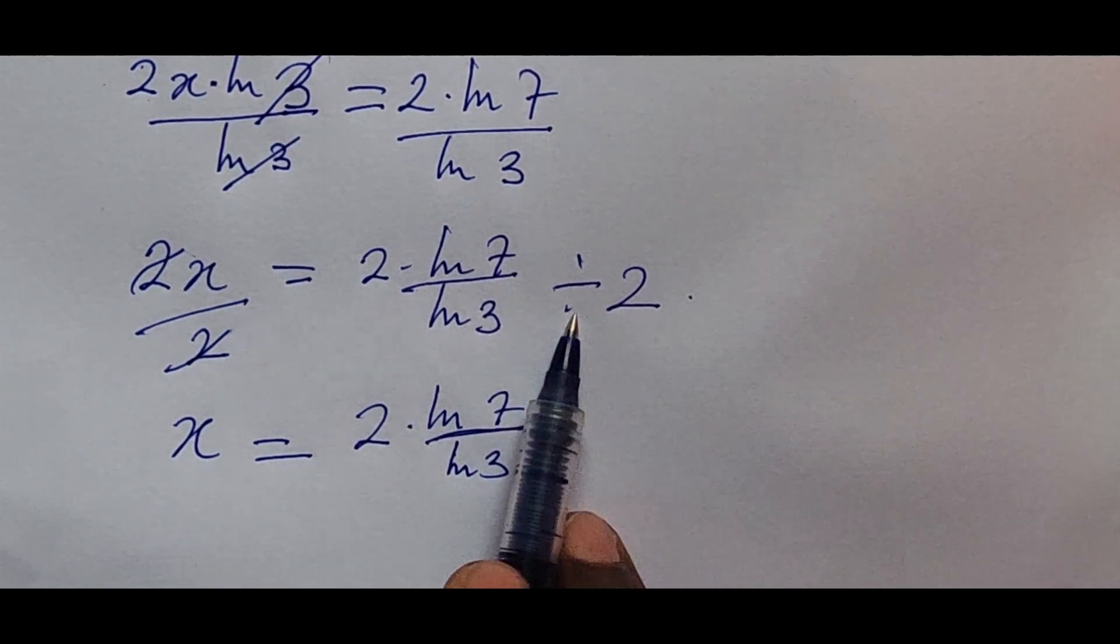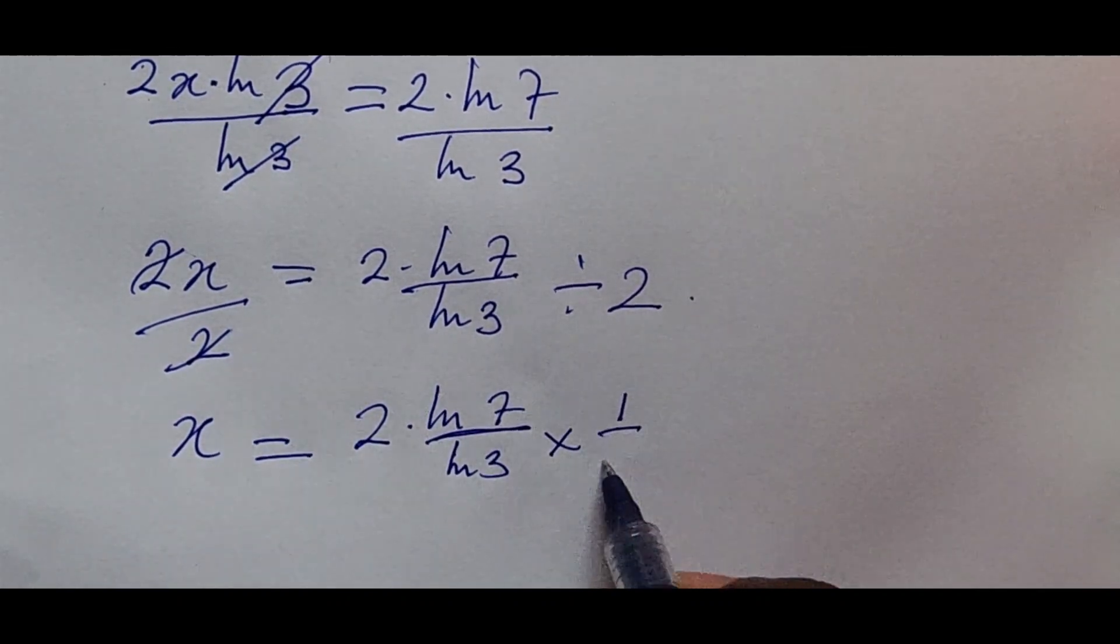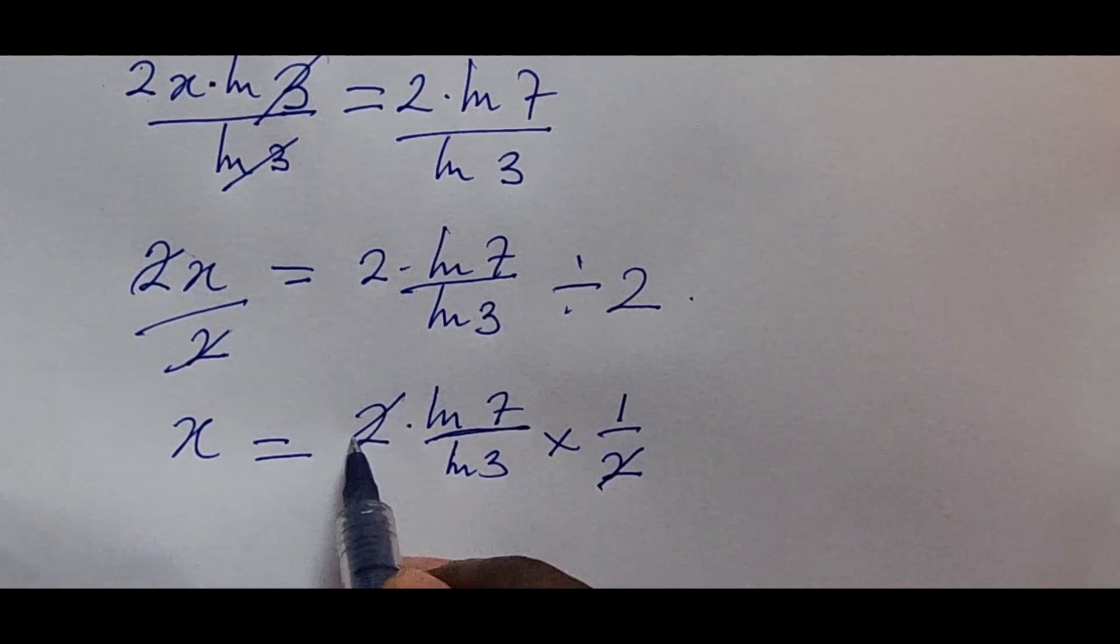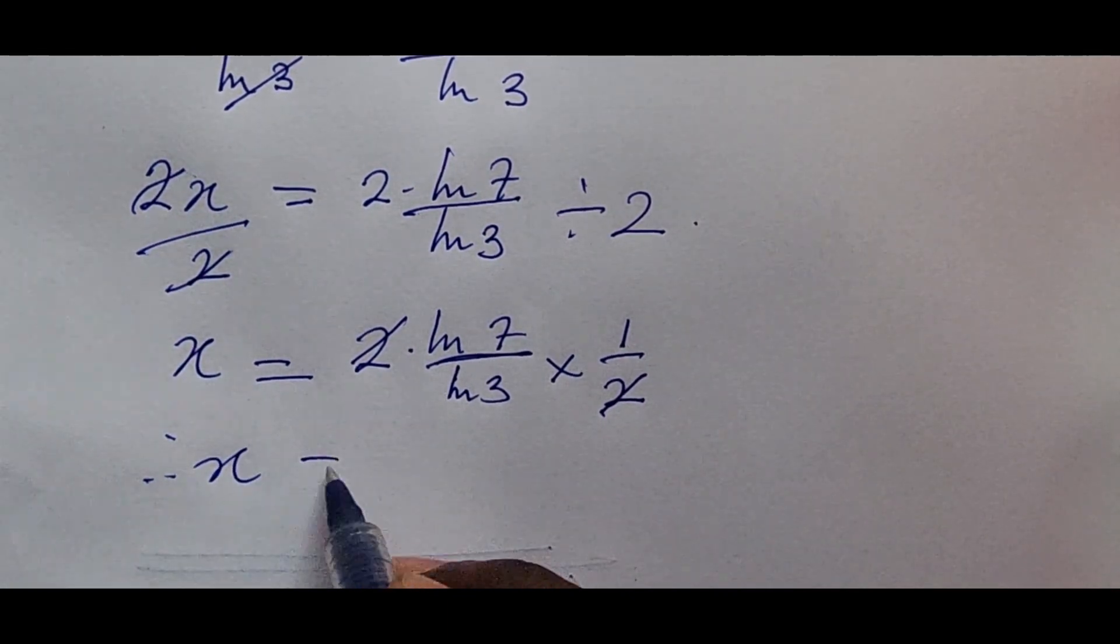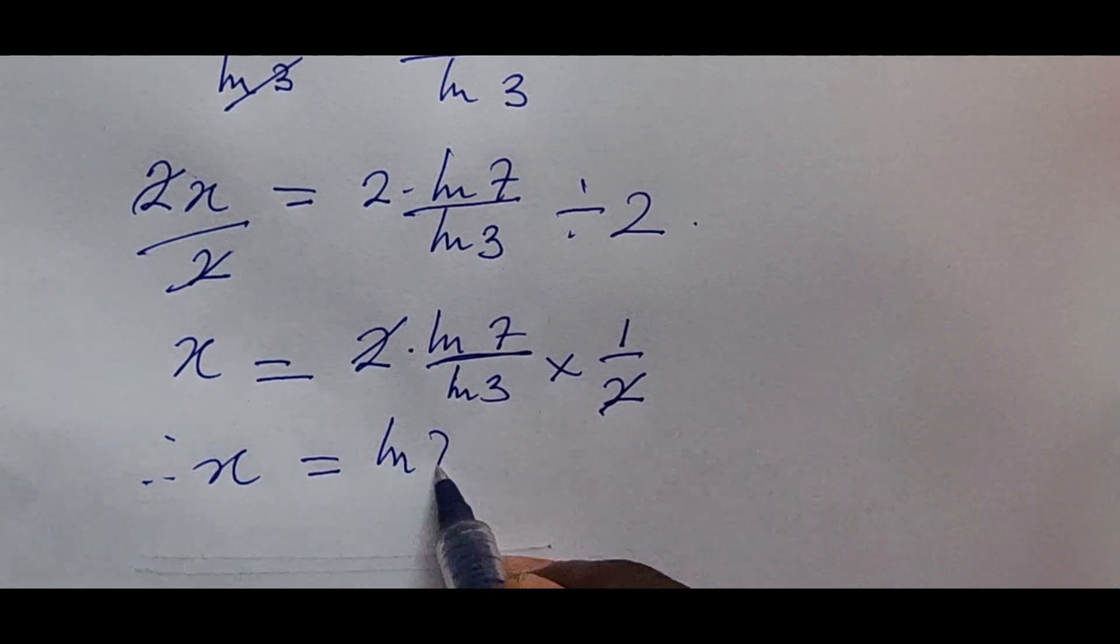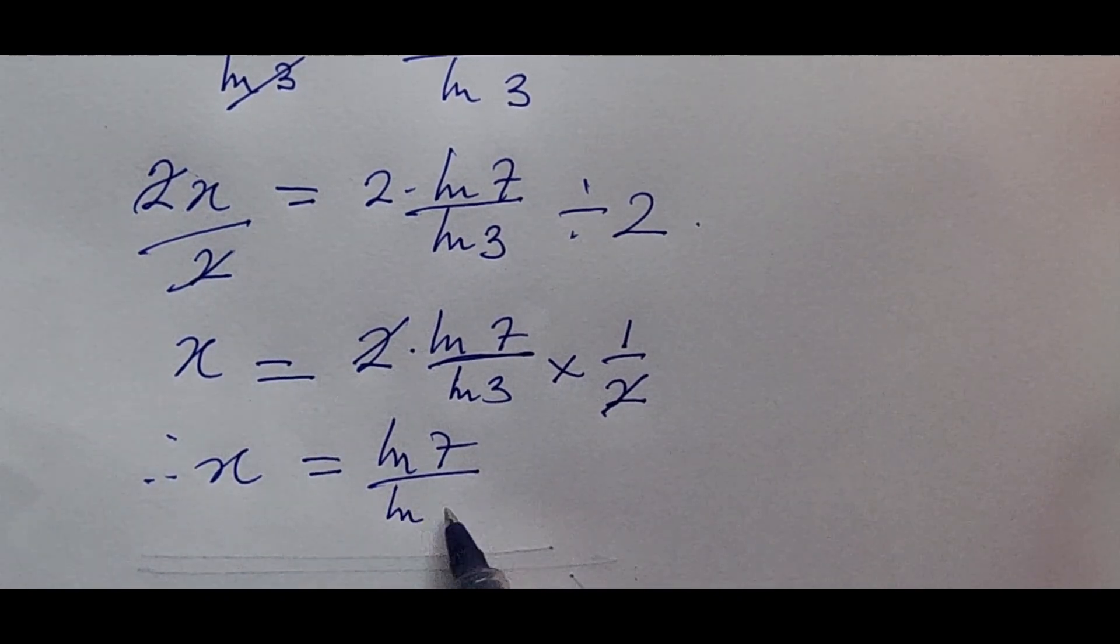We change this to multiplication. It's going to give us 1 over 2, and these 2s cancel. So we now have therefore x is equal to the ln of 7 all over the ln of 3.